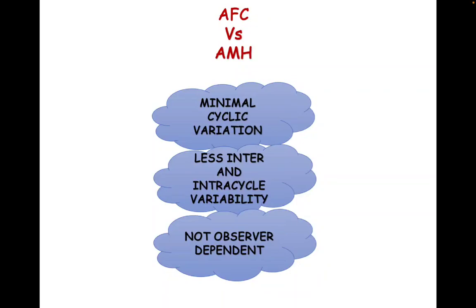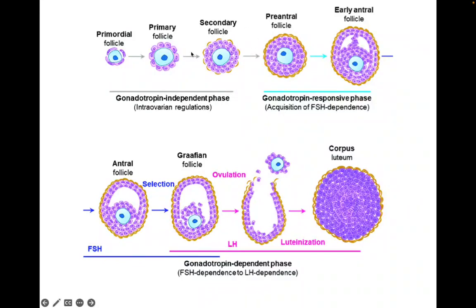These are the advantages of AMH over AFC. Now the key question: which is better when a disparity comes? For example, in a patient with decreased ovarian reserve, suppose the AFC is only three antral follicles but AMH comes out to be one — then which value do you use to decide the stimulation protocol, AFC or AMH?